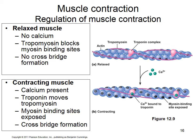Calcium from the sarcoplasmic reticulum regulates contraction. In a relaxed muscle, tropomyosin blocks the myosin binding sites on actin — low calcium in the sarcoplasm means troponin keeps tropomyosin on the binding sites. No matter how much ATP is in the cell, there's no contraction without interaction between actin and myosin.